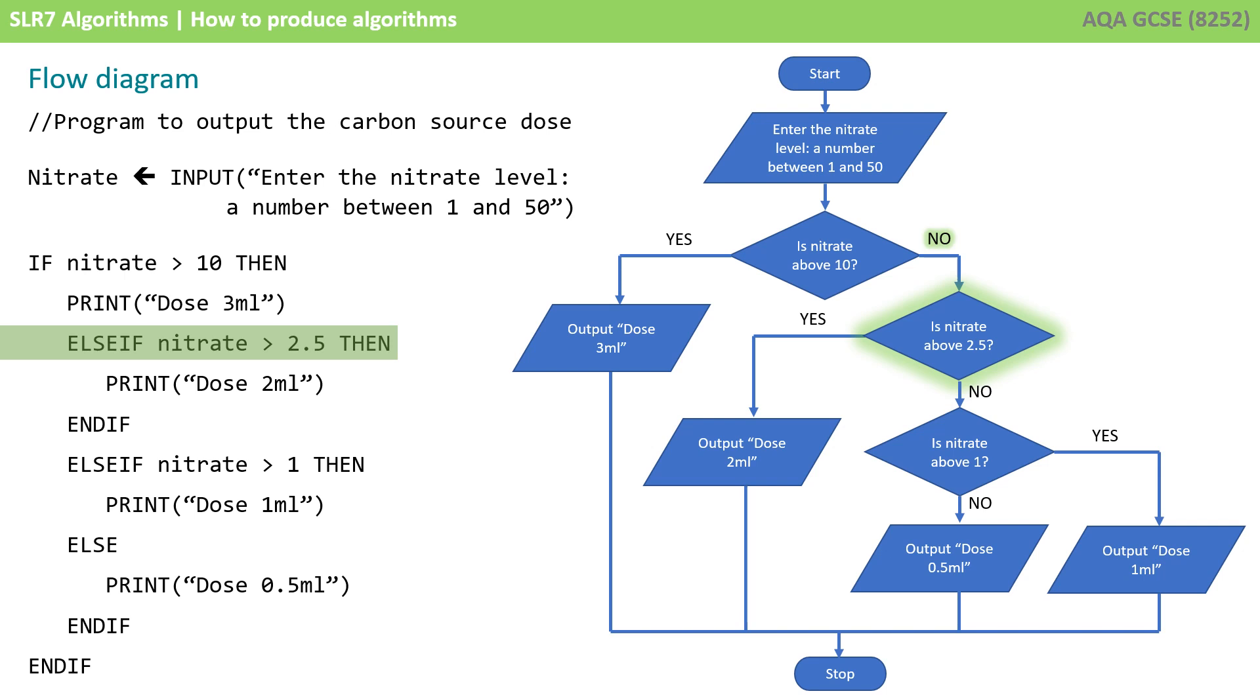Otherwise, if nitrate is greater than 2.5, then dose 2 mils. Otherwise, if nitrate is greater than 1, dose 1 mil. Otherwise, dose half a mil. It's exactly the same program, just expressed in a different way.